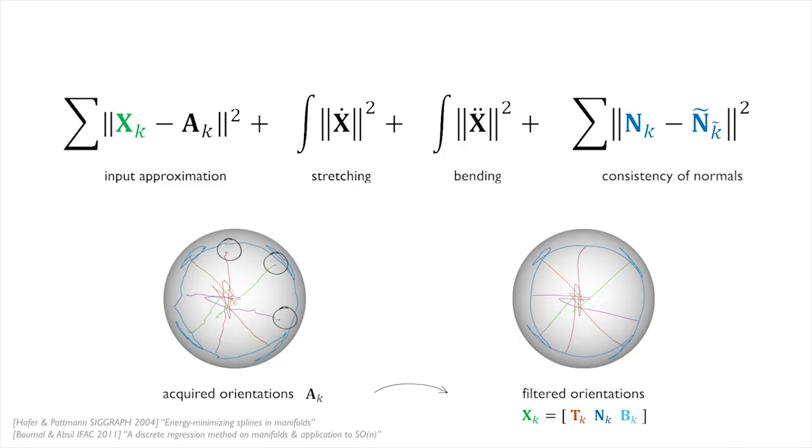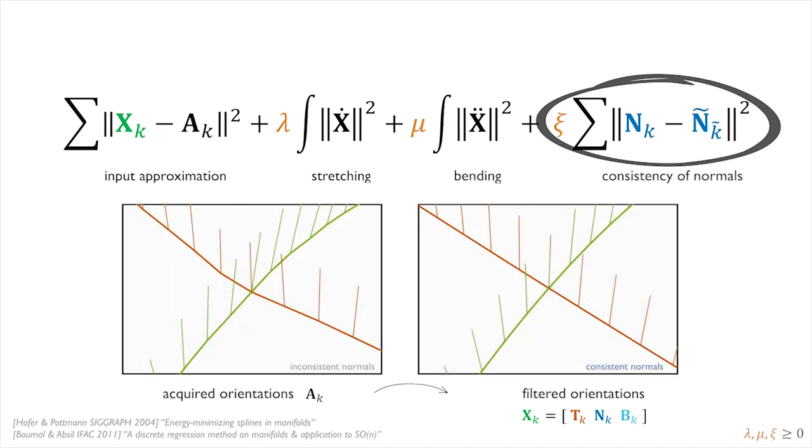By working directly in this space, we can easily include the constraints for consistency of normals at intersections.